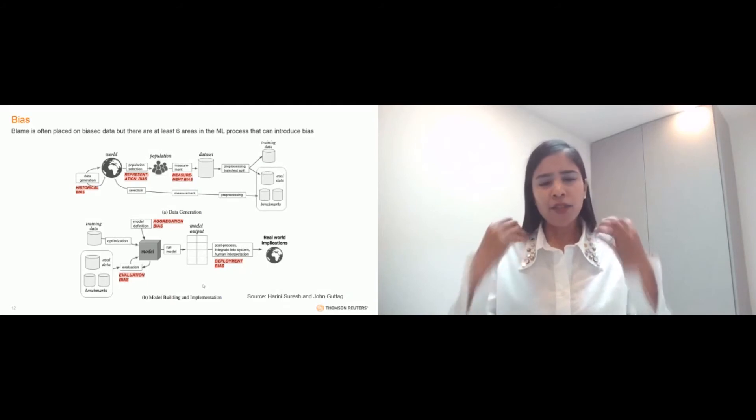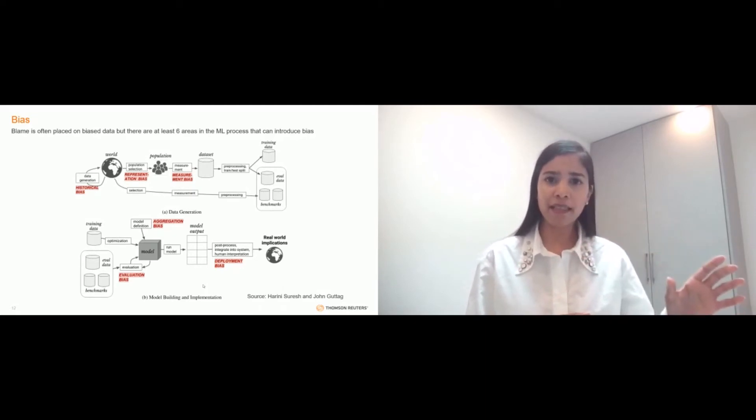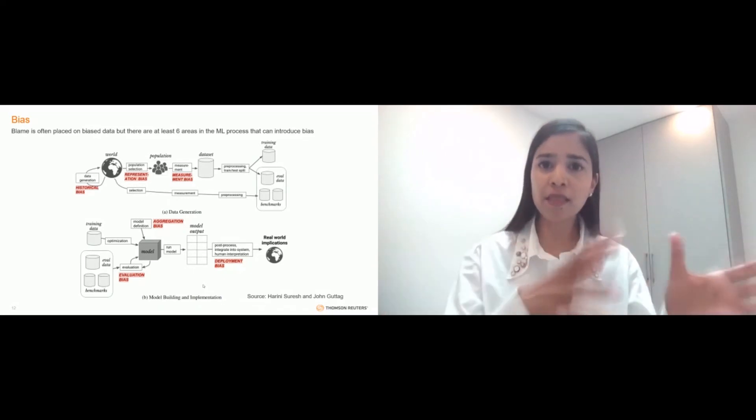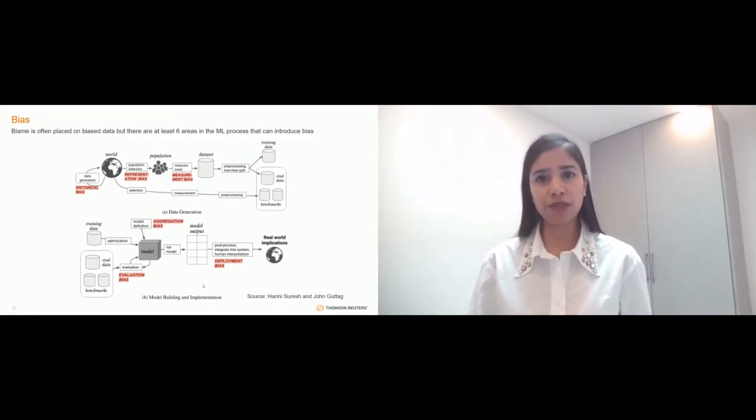And even though this is a very broad topic, it's got many layers of social and technological complexity. When it comes to the world of AI, the blame is often placed squarely upon the shoulders of biased data. And yes, biased data is a problem, but researchers at MIT discovered that there are at least six places in the machine learning process where bias can be introduced.